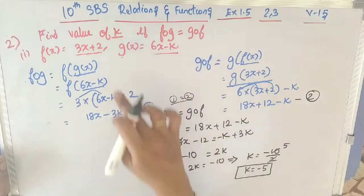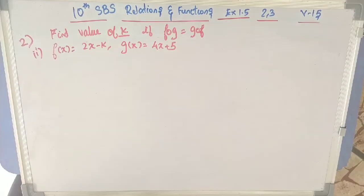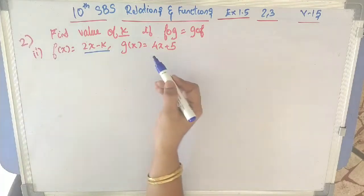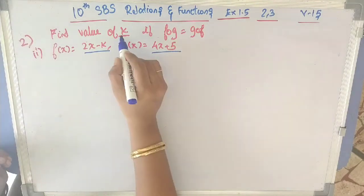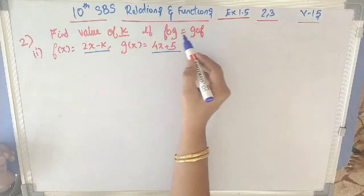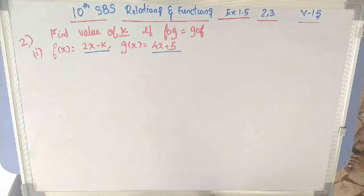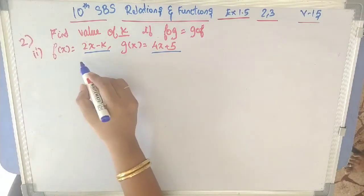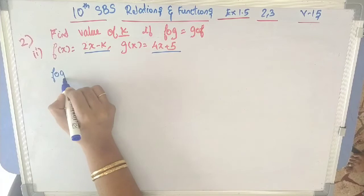Now let's go to the second part of Problem 2. Here f(x) = 2x − k and g(x) = 4x + 5. We have to find the value of k using the condition f∘g = g∘f.